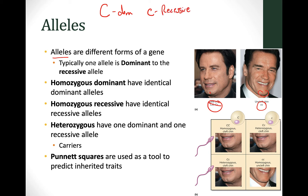Dominant is going to cover up the recessive allele. In order for the recessive trait to show through, you can't have a dominant allele present. Each person has two spots for each gene — two copies, one from mom and one from dad. So we're going to get one allele from mom and one allele from dad.